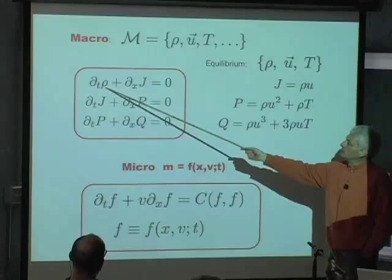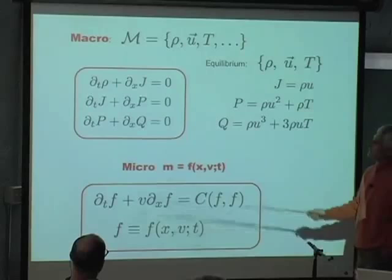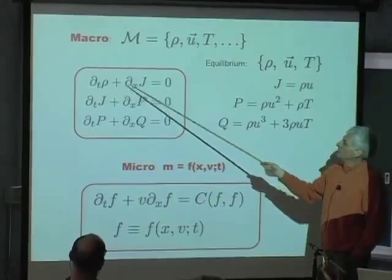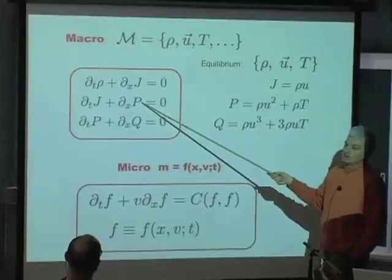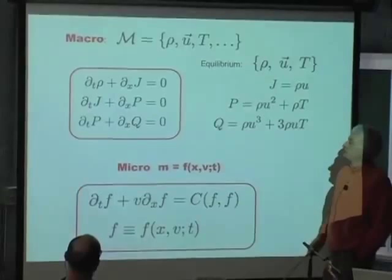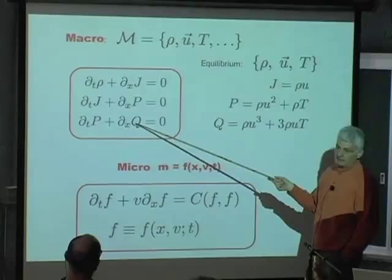So it's a continuity equation: the time derivative of the density is driven by the divergence of the flow, of the current — I just write in one dimension, but in three dimensions this will be a divergence and a vector. The time derivative of the current is driven by the divergence of the momentum flux tensor. And if you have thermal transport, you have the time derivative of the momentum flux tensor driven by the divergence of the heat flux tensor.